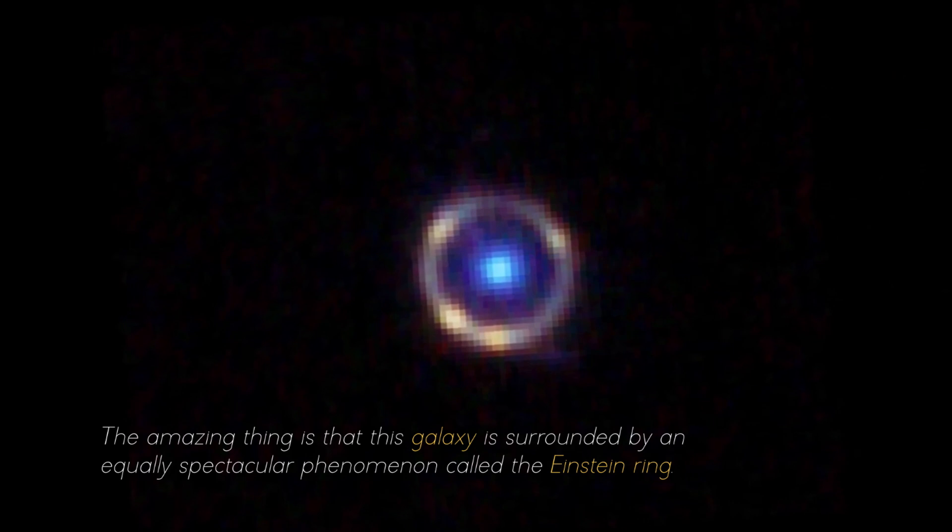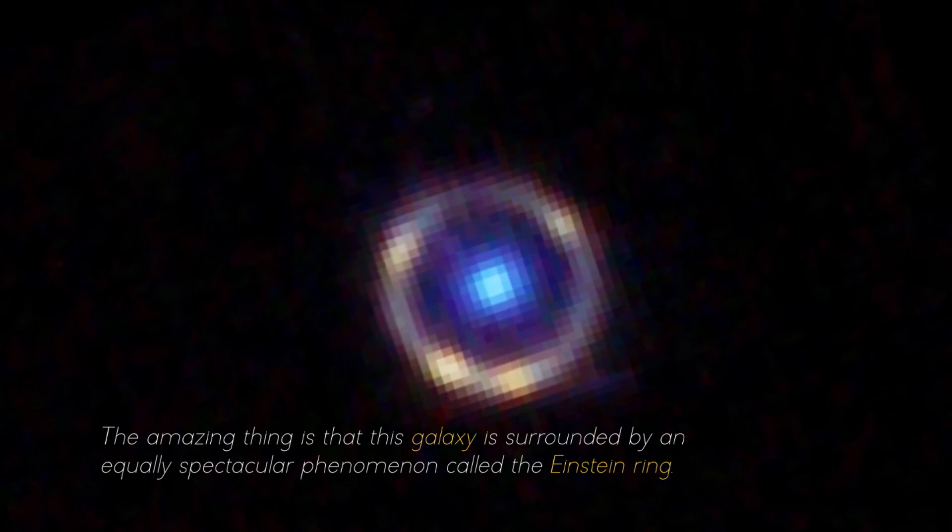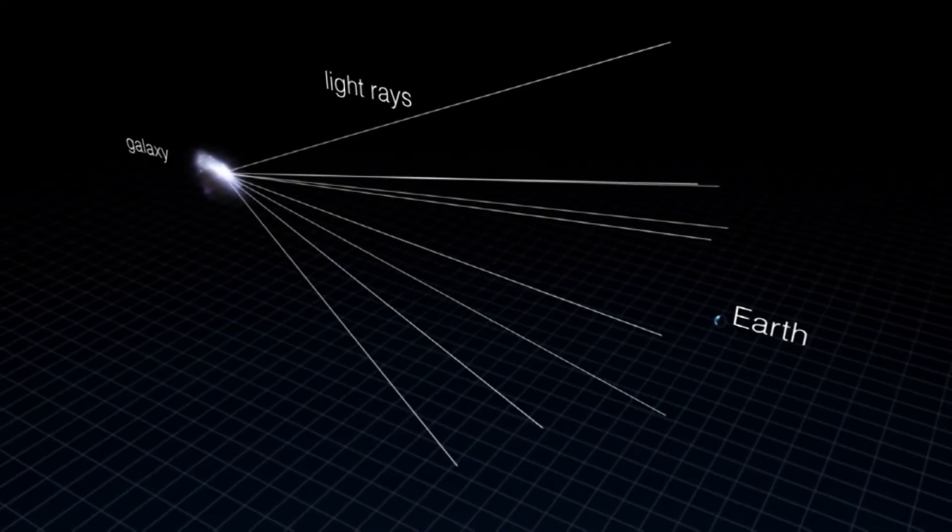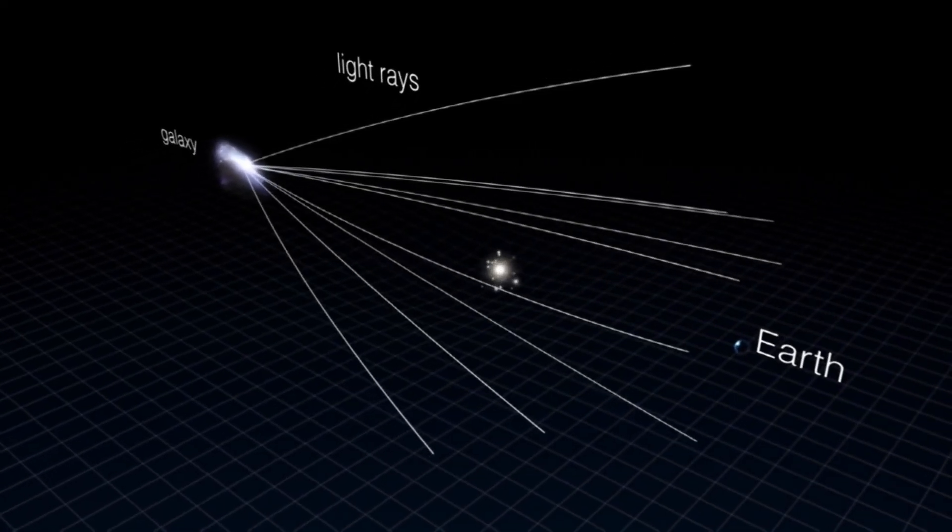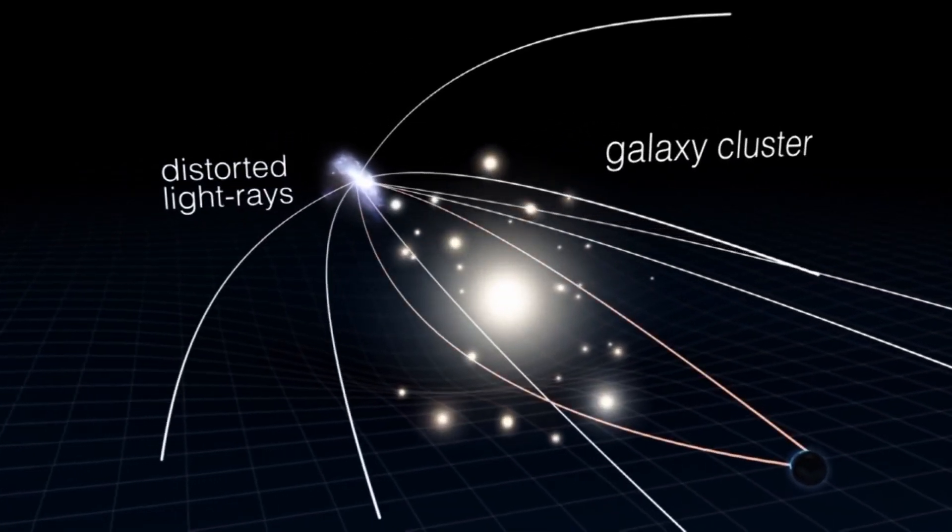The amazing thing is that this galaxy is surrounded by an equally spectacular phenomenon called the Einstein Ring. This phenomenon occurs when light from a distant galaxy is deflected and amplified due to the gravitational influence of a nearby galaxy.